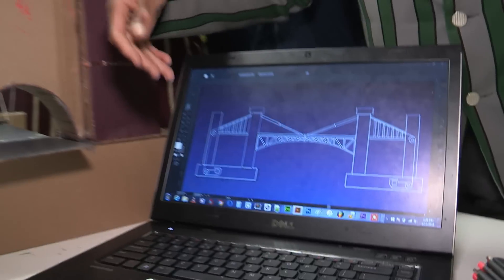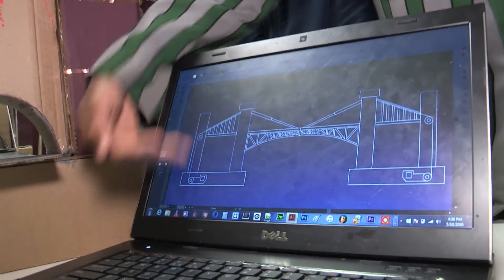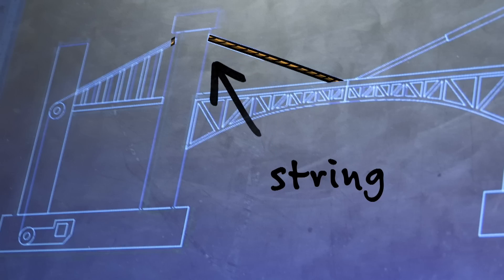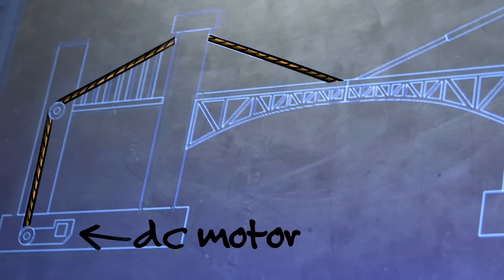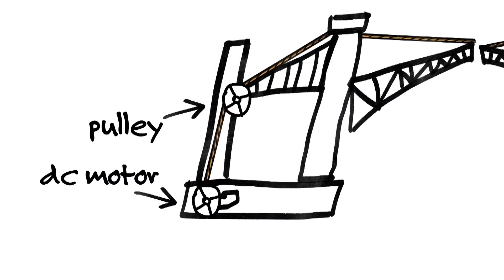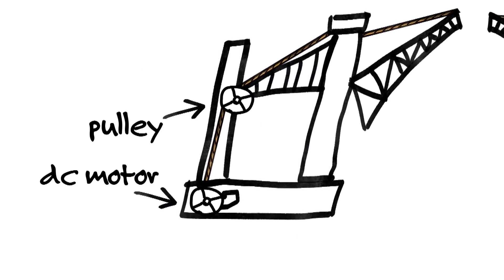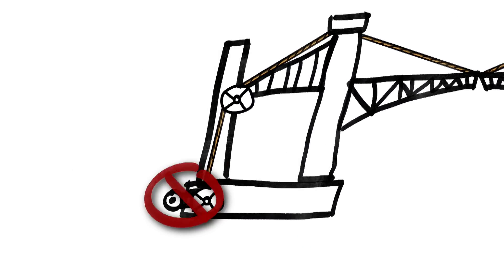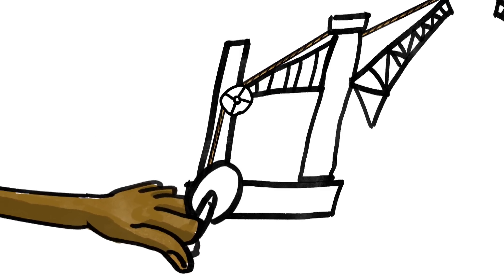Our first step was to plan out the bridge. This is our first blueprint. The string was supposed to be connected from this point and pulled by the DC motor, guided by the pulley. We didn't have enough resources to make it an automated bridge, so we had to go with a manual design instead.